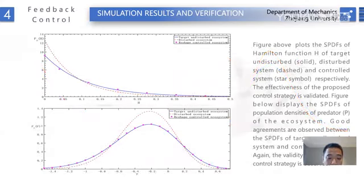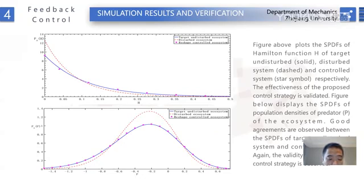Finally, I want to verify the effectiveness of the desired control force. The figure above plots the stationary probability density function of the Hamiltonian function H of the target undisturbed system, disturbed system, and controlled system, respectively, validating the effectiveness of the proposed control structure. The figure below displays the stationary probability density functions of population density of the ecosystem. Good agreement is observed between the stationary probability density functions of the target undisturbed system and the controlled system, again confirming the validity of the proposed control structure.